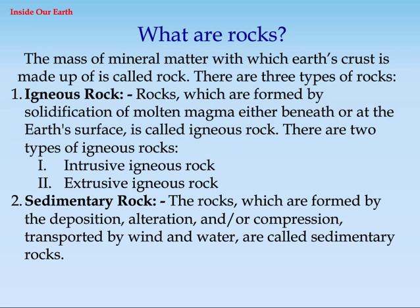There are two types of igneous rocks: 1. Intrusive igneous rock, 2. Extrusive igneous rock. 2. Sedimentary rock: the rocks which are formed by the deposition, alteration, and/or compression, transported by wind and water, are called sedimentary rocks.